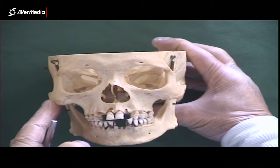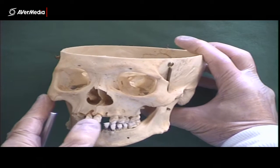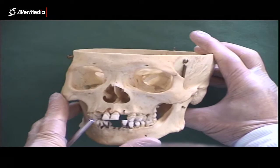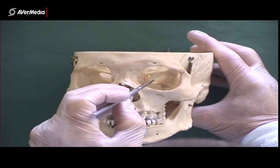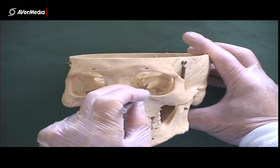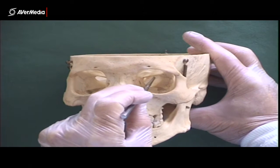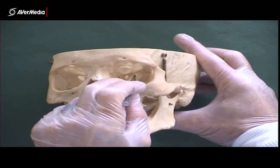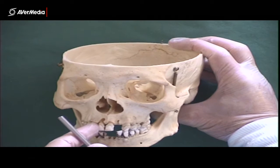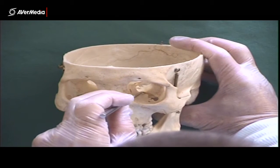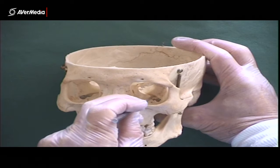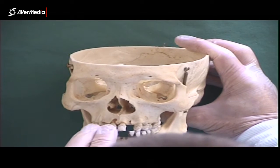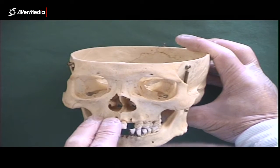If we look into the orbit itself, we can see a couple of cracks or fissures. Looking at the posterior part of the orbit, we can see one on the superior aspect — that's the superior orbital fissure. And then at a slightly different angle, we can see the inferior orbital fissure. So two fissures there: superior and inferior orbital fissures.